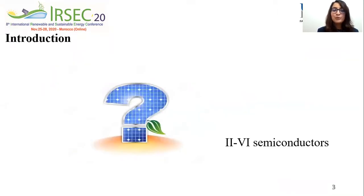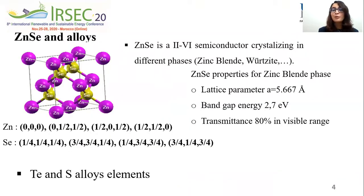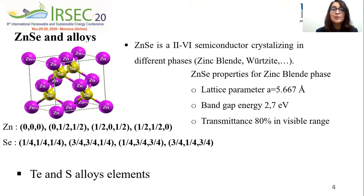Recently, the 2-6 semiconductors have been attracting great attention due to their electronic and optical properties, which make them good candidates in several applications. ZnSe is one of the 2-6 semiconductors crystallizing in different phases such as zinc blende or wurtzite. The one that concerns us here is the zinc blende phase. It has the following parameters and positions. To obtain ZnTe-Se and ZnS-Se ternary alloys, we combined zinc selenide with Te and S elements respectively.